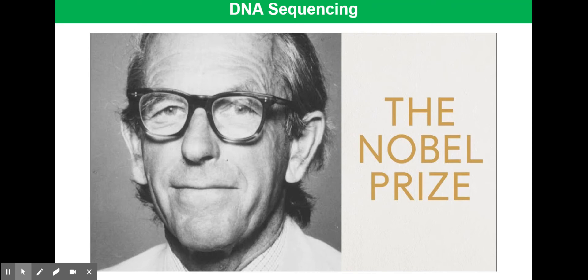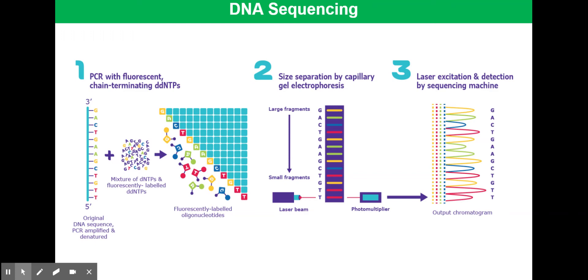Sanger's approach was to use a single strand of DNA as a template for four experiments in four separate dishes. Each dish contained a solution with the four bases A, T, C and G plus an enzyme DNA polymerase. To each dish a modified version of one of the DNA bases was added.